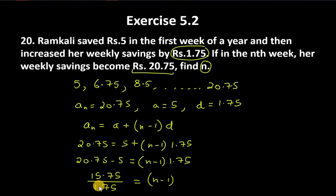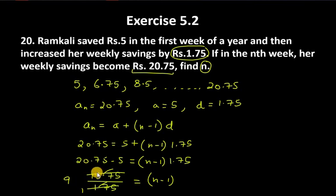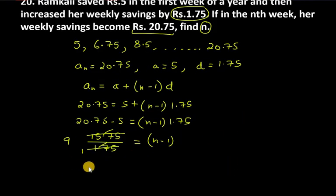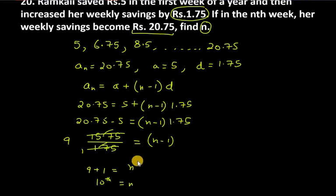Now we remove the decimals. 15.75 divided by 1.75 gives us 9. So (n minus 1) equals 9. We add 1 to the left hand side, so it will be 9 plus 1 equals n.